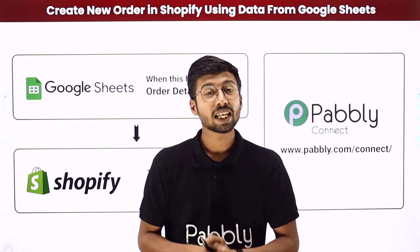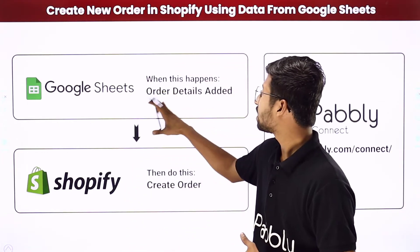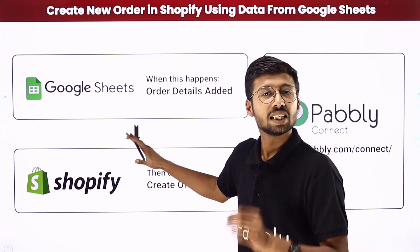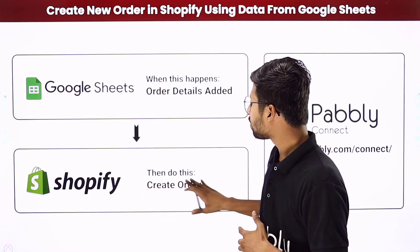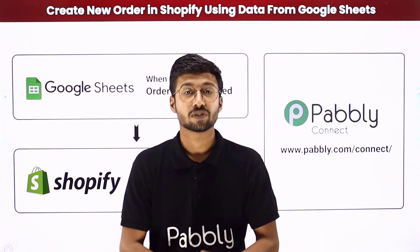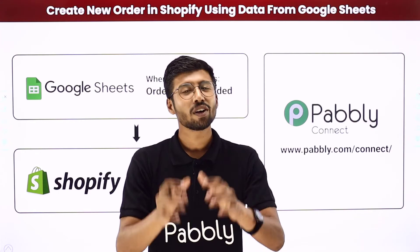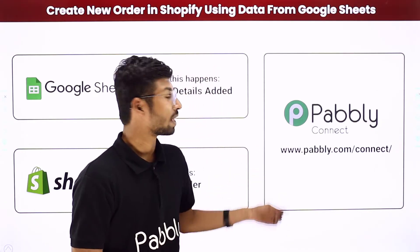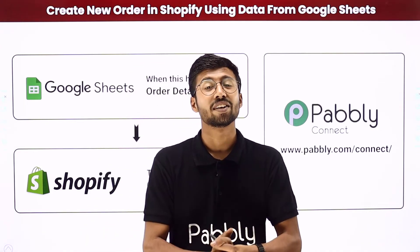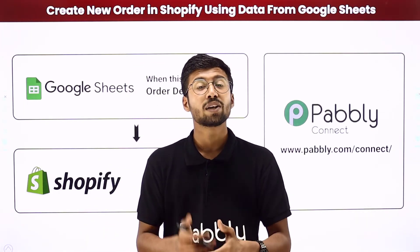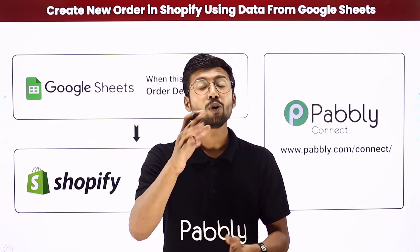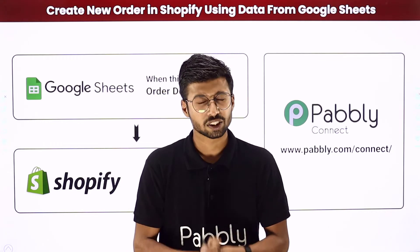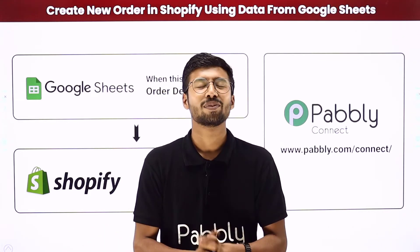In this video I came up with an automation by which whenever we add the order details of a new order into a Google Sheet, automatically and instantly that very same details will create a new order in our Shopify store as well. Now you must be thinking how we are going to do this. To make this happen we will be using Pabbly Connect, which is an automation and integration software. I'll show you the step-by-step guide to set up this automation by yourself, without any coding skills or technical knowledge.